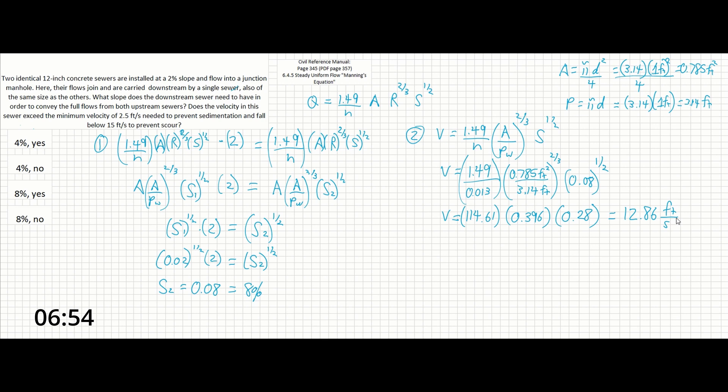And if we solve out for all of that, we will get 12.86 feet per second. So yes, that also falls between 15 and 2.5—it's up there but it's not quite above it. So I would say in this problem it's a slope of eight percent and a velocity that falls within the range, so yes, and that's all it takes to solve this problem.